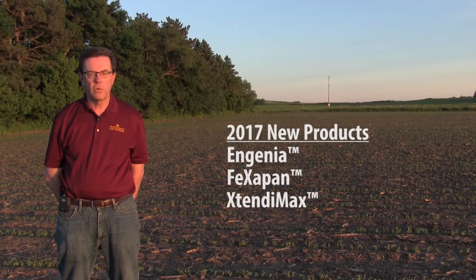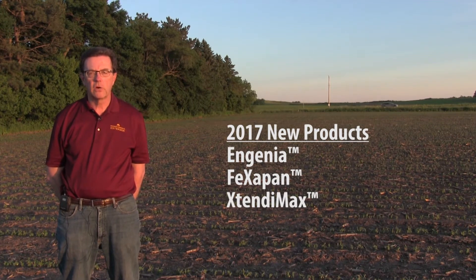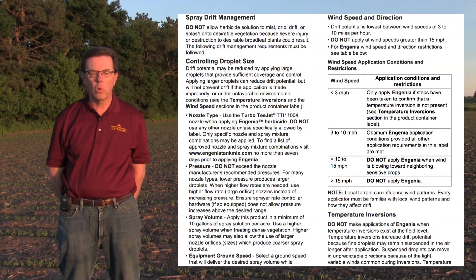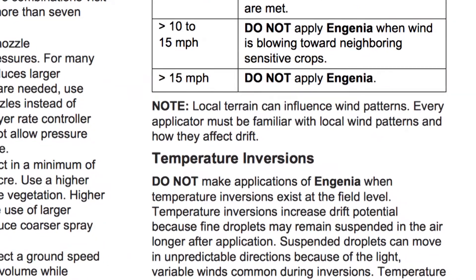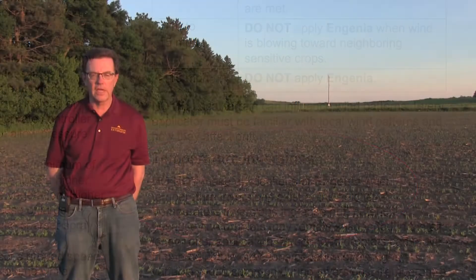There are a number of new products coming to market for both soybean growers and corn growers in Minnesota. Some of these are growth regulator based as well as traditional glyphosate based. All of these products have disclaimers on their label warning about making applications during temperature inversions. Applicators are highly encouraged to read the labels carefully, follow directions, and avoid temperature inversion situations when making their post-emergence applications.